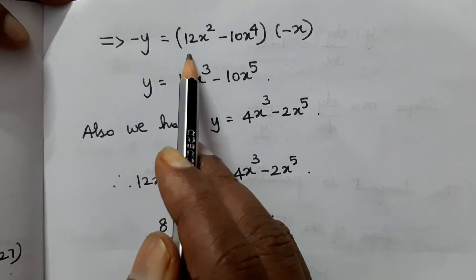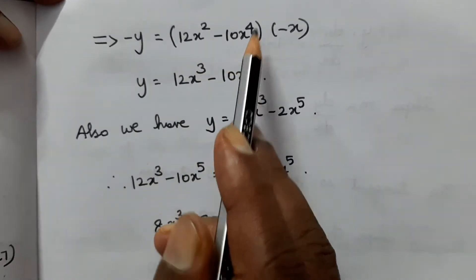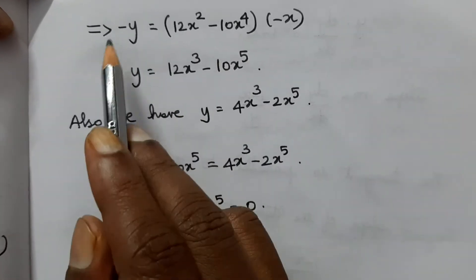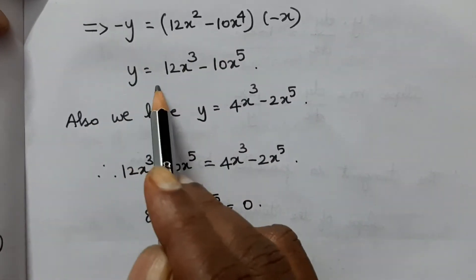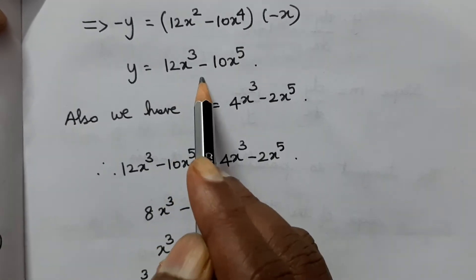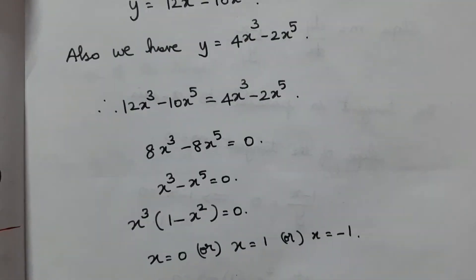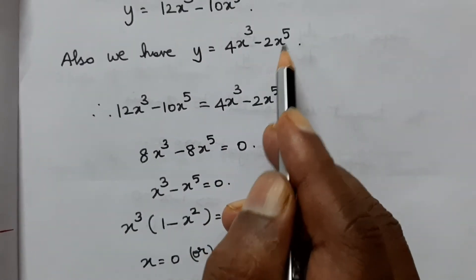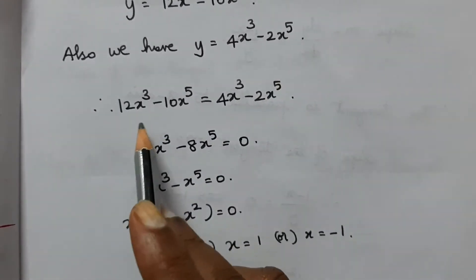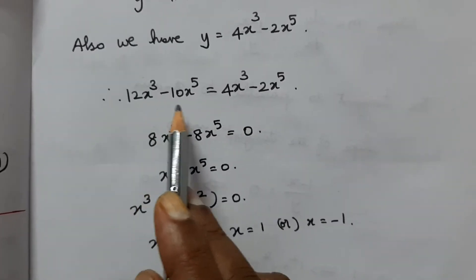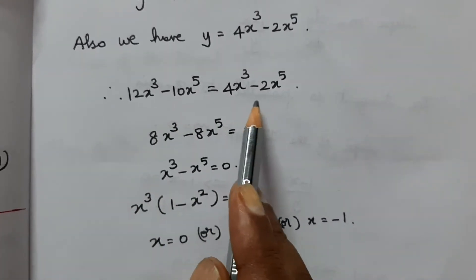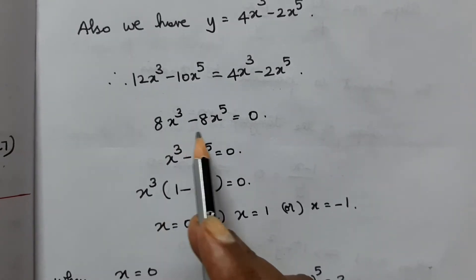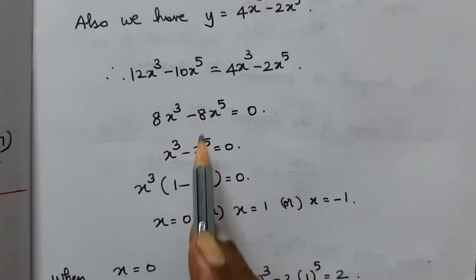Simplifying: y₁ = 12x₁³ - 10x₁⁵. But we also know y₁ = 4x₁³ - 2x₁⁵ from the curve. Setting these equal: 12x³ - 10x⁵ = 4x³ - 2x⁵, which gives 8x³ - 8x⁵ = 0.